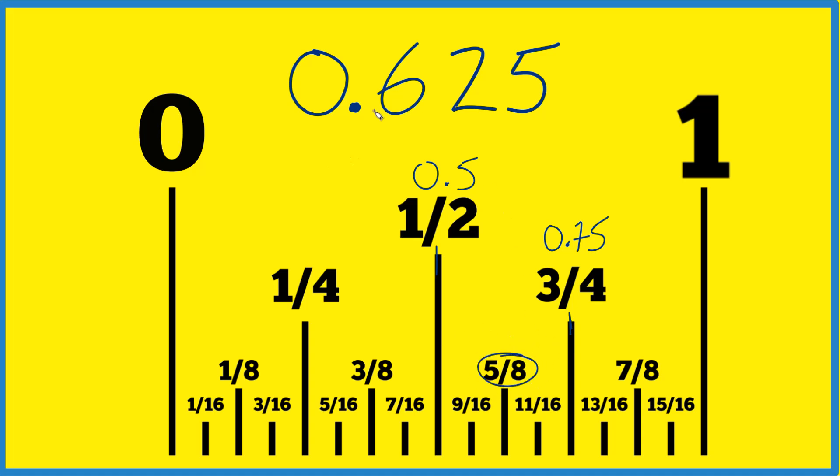So 0.625 in inches as a fraction, that's five-eighths. This is pretty common when you're talking about drywall or hoses or other types of things like that. 0.625 equals five-eighths of an inch.